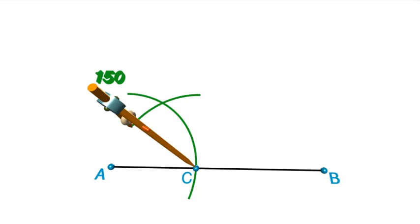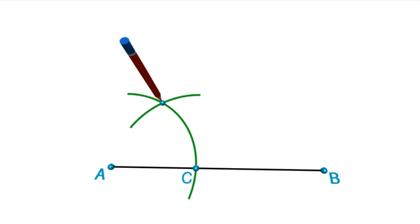So that initial distance AC must not change as I move the metal tip of the compass from A and put it at C to scribe the second arc to intersect the first arc at D.